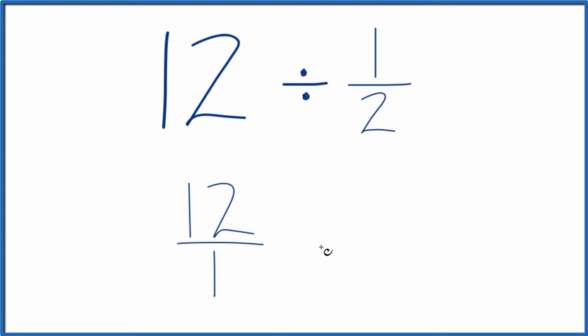Then instead of division, we're going to multiply by the reciprocal of 1 half. To get the reciprocal for a fraction, you move the numerator to the bottom and the denominator to the top. So we'd have 2 over 1.